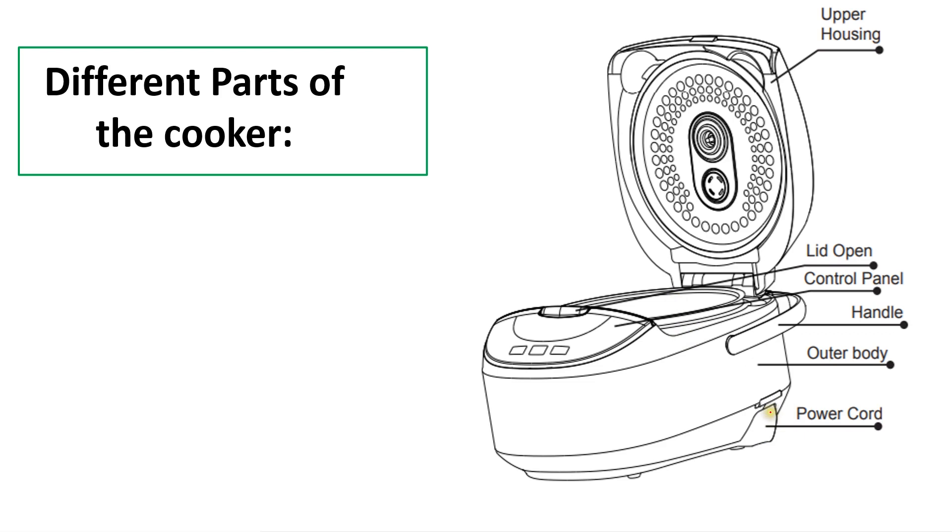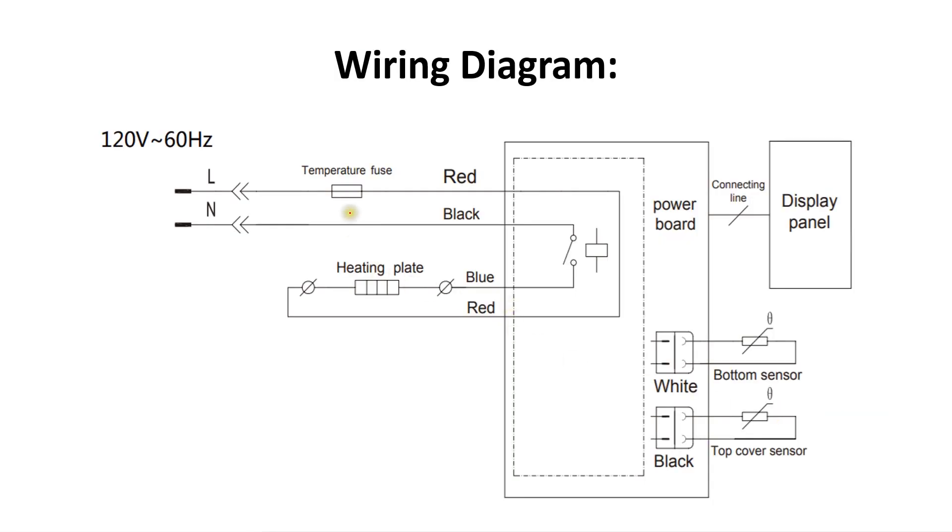This is the power cord which is connected to the electrical utility socket. And this is the wiring diagram. This is the line and neutral, 120 volts AC. The line voltage is fed to the heating plate at one end through this temperature fuse.